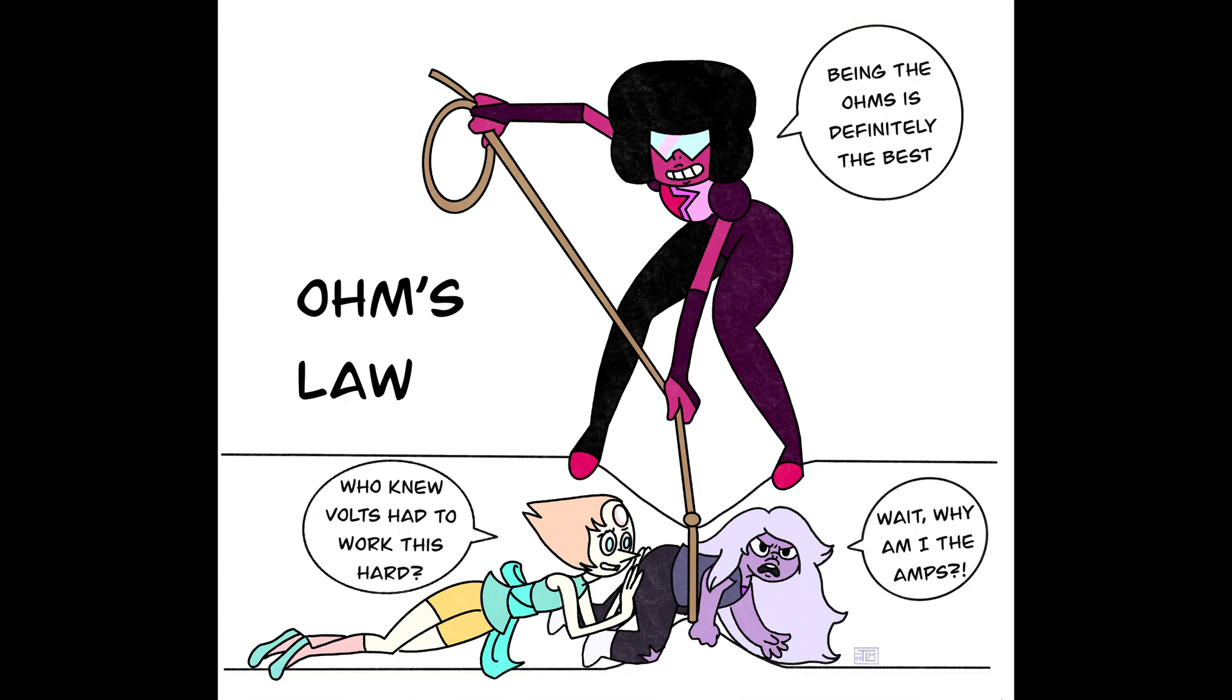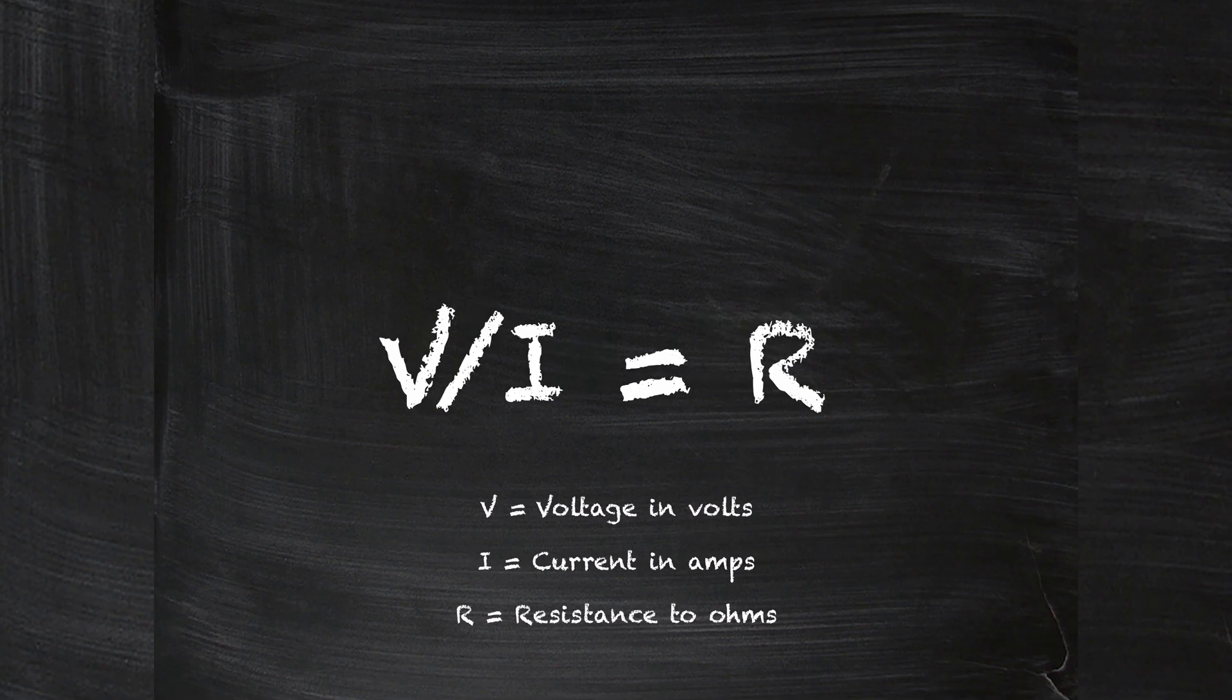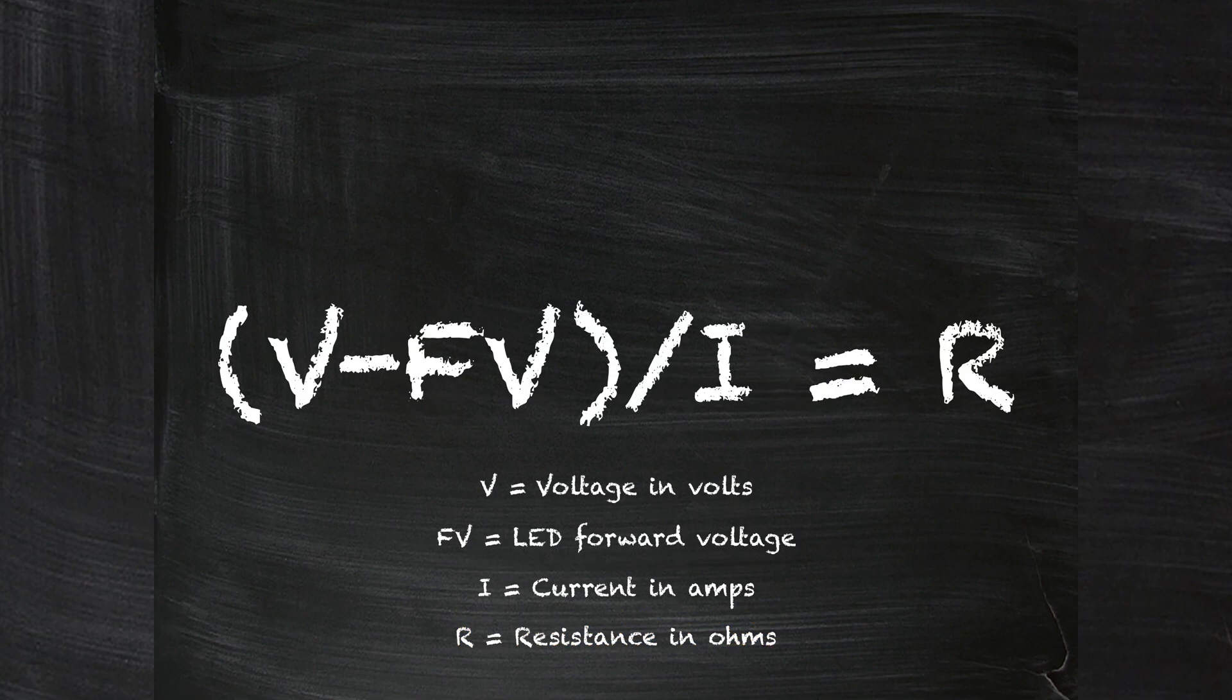So we need a resistor, and to figure out the resistor value, we need Ohm's law. So this is Ohm's law, but we're not going to use it like this. We're going to use some algebra and switch it around. This gives us voltage divided by current equals resistance. But for LEDs, we need voltage minus forward voltage divided by current equals our resistance value.